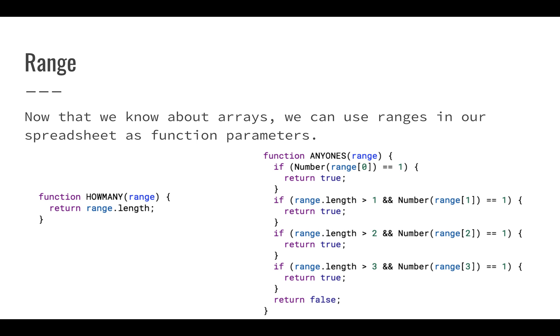But you can see here there's a problem. So this function, any ones, will check the first thing in the range, it will check the second thing, the third thing, the fourth thing, and then it just gives up. So we're not checking everything. And you can see that the code is very repetitive. If number range[0] is equal to one, we're going to return true. And then we're going to check to see if it's big enough. And there's actually a lot of interesting things to look at here. One is if we weren't checking to see if range.length was larger than a certain value, we'd actually run into problems because the range might be only one value or two values. So we have to check that.